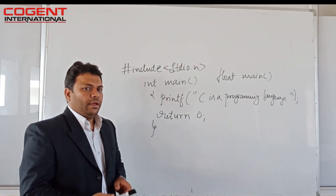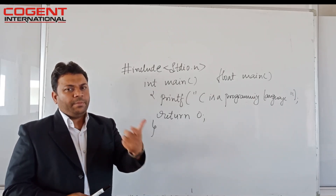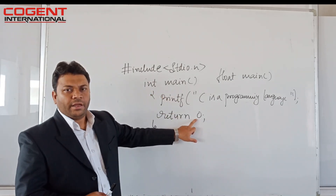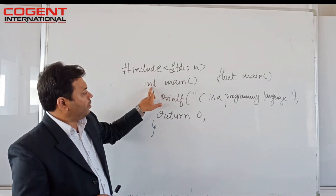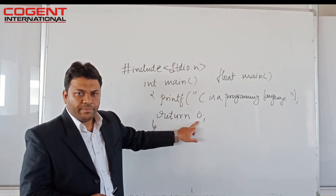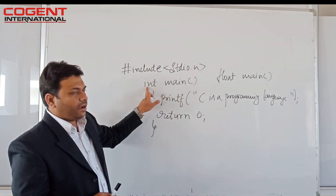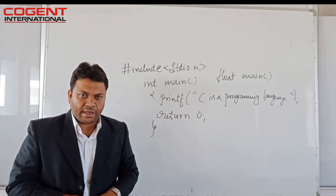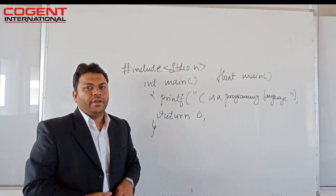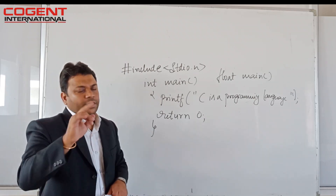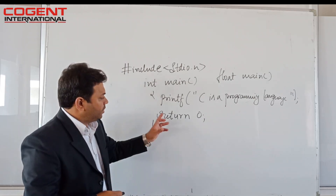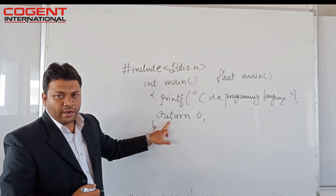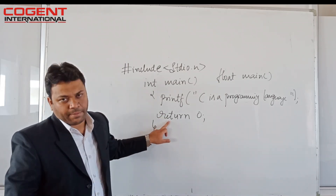If I include other data types for the main function, I must return the respective data type value. If it is int, I must return an integer value; if float, a floating point value; if char, a character value. Every function must return a value in C, and this program demonstrates the usage of the return statement.